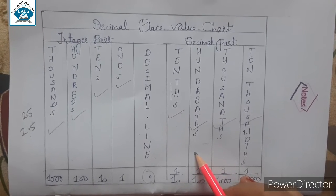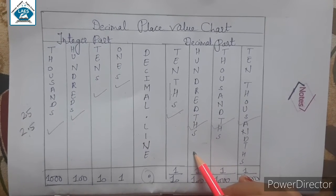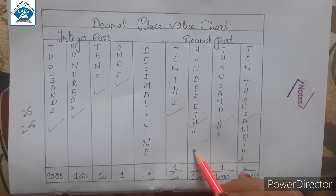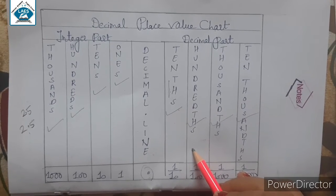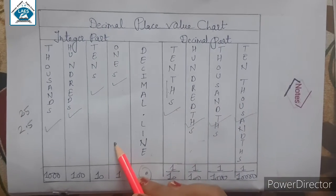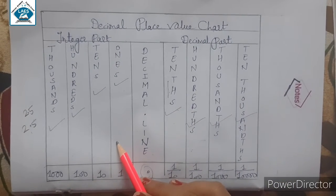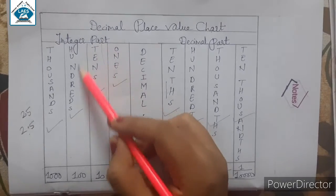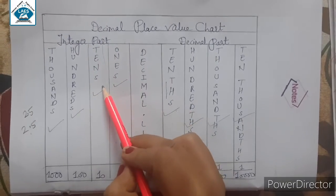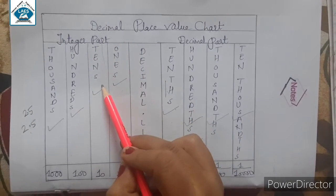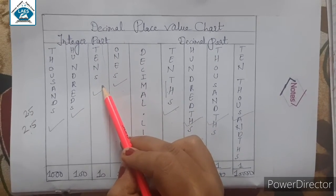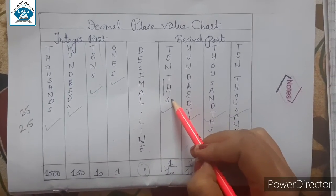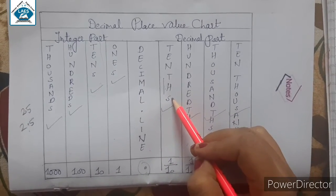Here the names are looking the same but these are different. For example in the integer part you will see 'tens,' but in the decimal part here we have 'tenth' — an 'S' is added at the end.